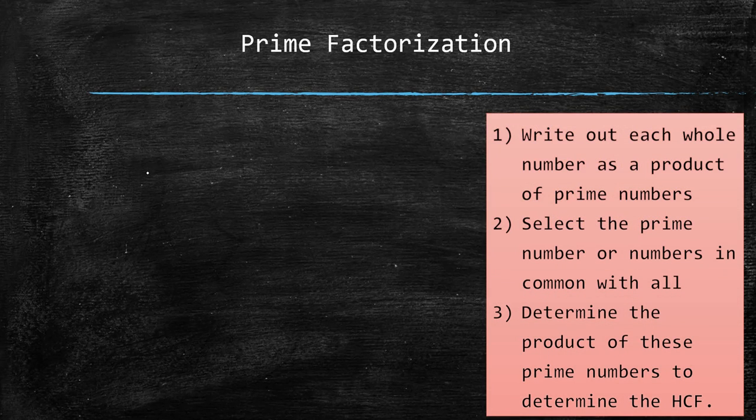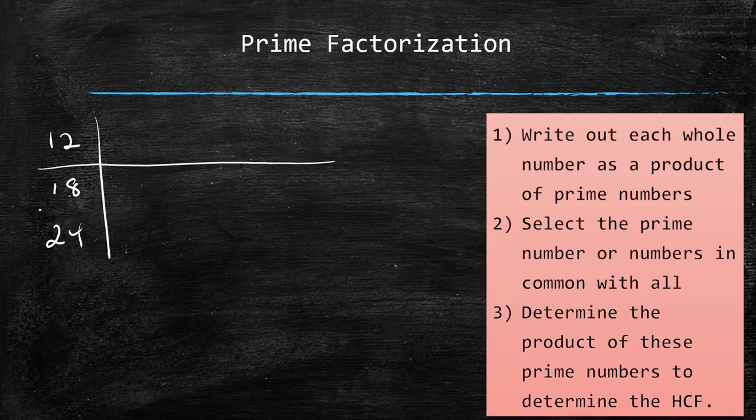The next method is called prime factorization. We write out each whole number as a product of primes. Let's write 12 here, 18 here, and 24 here. When listing these products of primes, I'm going to write the numbers separately in their own little boxes.